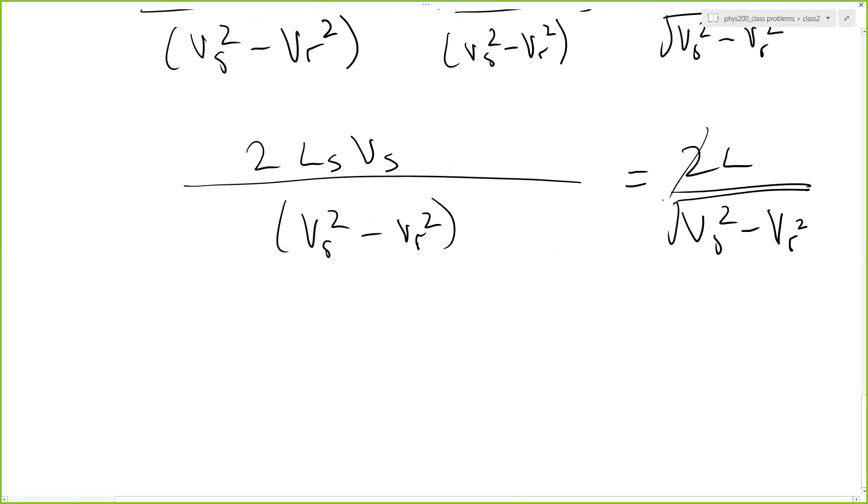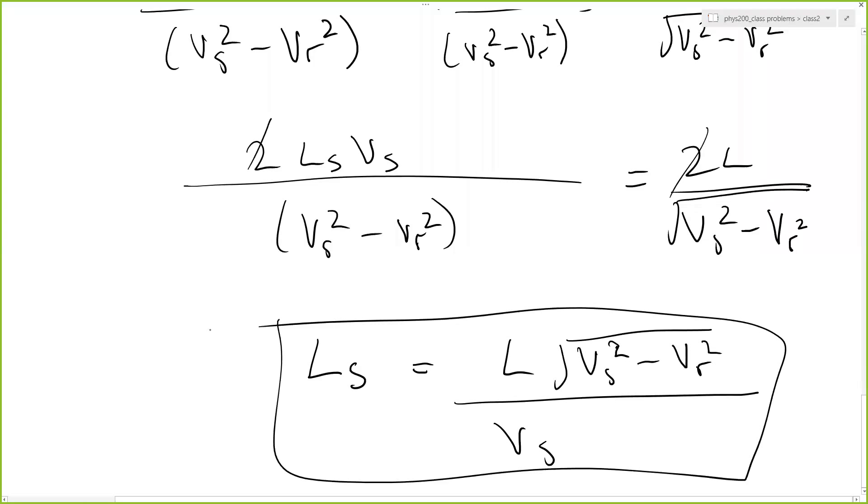Equals 2L divided by square root of Vs squared minus Vr squared. And if you simplify it, you're just going to get Ls is equal to L divided by Vs. And on the top, you would have the square root of Vs squared minus Vr squared. And that is the final result.